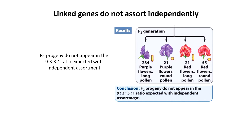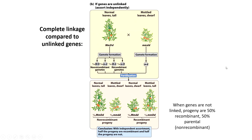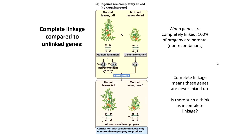We then do a self-fertilization of these plants. They're all heterozygous, and so what we would expect is a 9:3:3:1 ratio. However, when we look at the progeny — the actual observed numbers of plants — that is not what we see. This is not a 9:3:3:1 ratio. The reason is because these genes are linked.